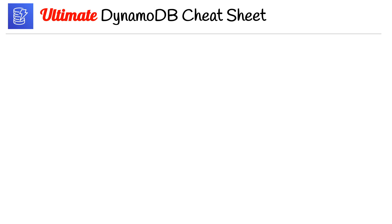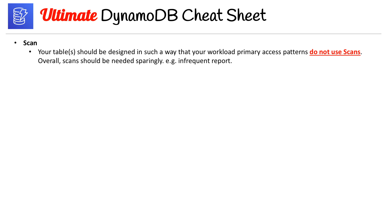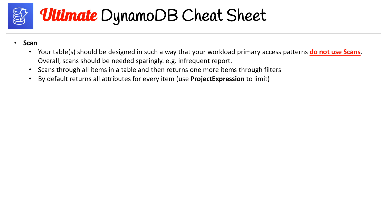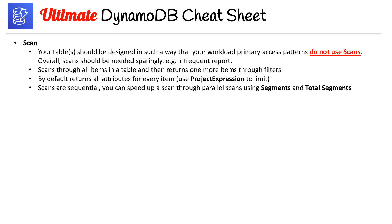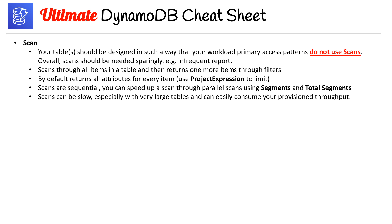On page four, we'll talk about scans and queries. Your table should be designed so that your primary access patterns do not use scans — scans should be needed only sparingly for infrequent reports. Scans go through all items in a table and return one or more items through filters. By default they return all attributes for every item; you can use ProjectExpression to limit attributes. Scans are sequential but can be sped up through parallel scans using segments and total segments. Scans can be slow with very large tables and easily consume your provisioned throughput.